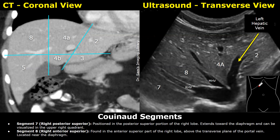You get this image when you place the probe parallel and just below the costal margin — you can see all three hepatic veins. The left hepatic vein is between segment 2 and segment 4a. Segments 2 and 4a are in contact with the diaphragm. Segment 4a will be between the middle and left hepatic veins. Segment 8 is between the right and middle hepatic veins. Segment 7 will be seen between the diaphragm and the right hepatic vein. The probe is angled towards the patient's right shoulder, so we are seeing the superior parts of the liver at the lower half of the image.